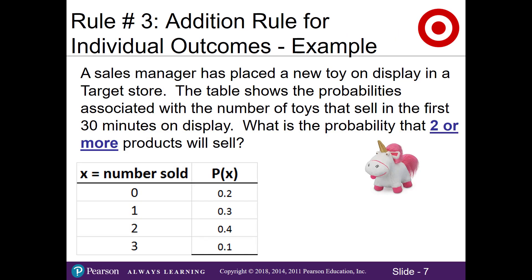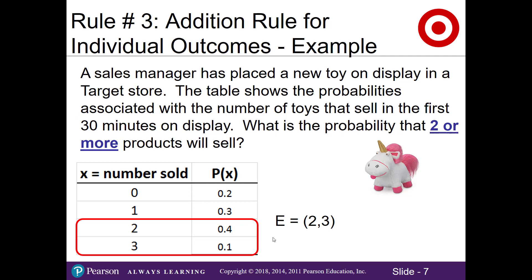Using the same Target store example with the probabilities for the number of products that sell in the first 30 minutes, if we wanted to know the probability that two or more products would sell, we identify the related probabilities in the table — two and three products sold — written as the event (2, 3). Adding those probabilities: 0.4 plus 0.1 equals 0.5. Therefore the probability of two or more products selling is 50%.